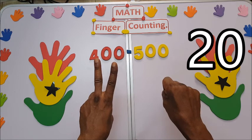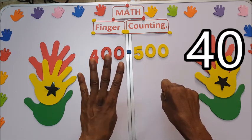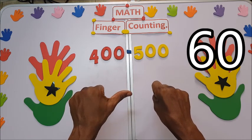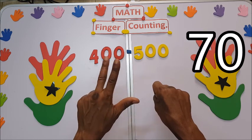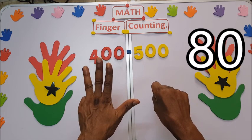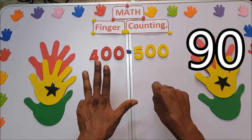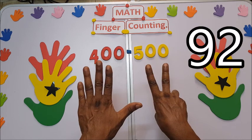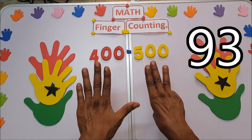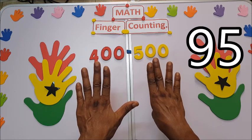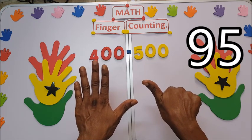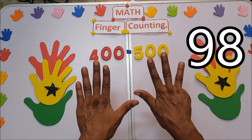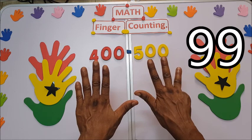20, 30, 40, 50, 60, 70, 80, 90, 91, 92, 93, 94, 95, 96, 97, 98, 99.